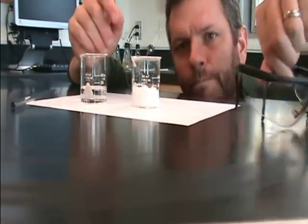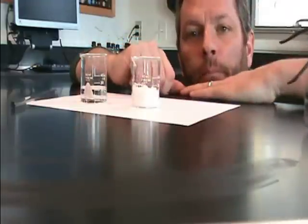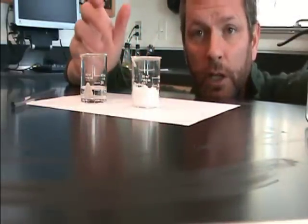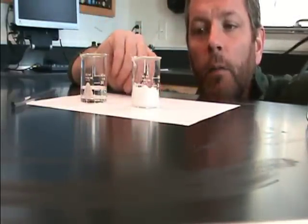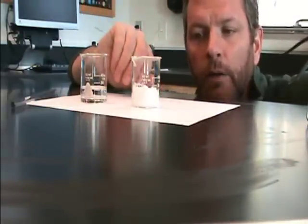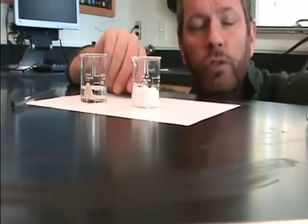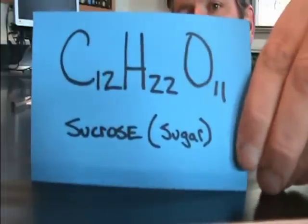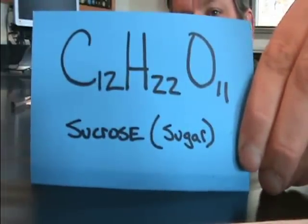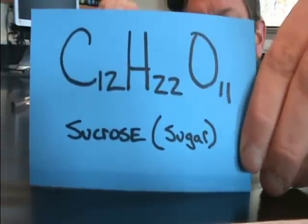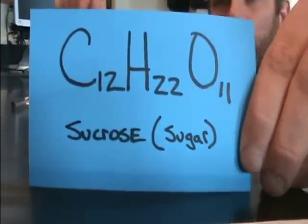Hello biology students. We're talking about biology, but we also need to know a little bit of chemistry here. What I'm going to do right now is a little demonstration of a chemical reaction between two substances. The first substance is C12H22O11 — that's just table sugar, that's sucrose.